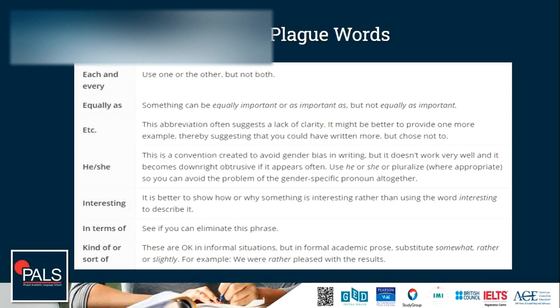The word 'interesting' — it is better to show how or why something is interesting rather than just saying 'it is interesting.' Just describe it; it's better. 'In terms of' — try to remove this in your essays and see the big change that will happen. 'Kind of' and 'sort of' — this is common for a lot of students, but it doesn't really sound good in written form.